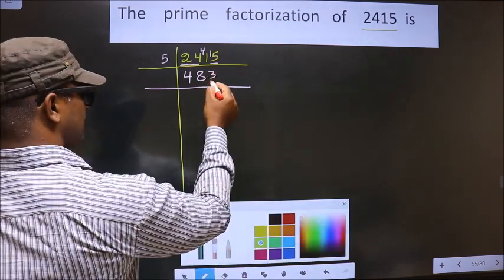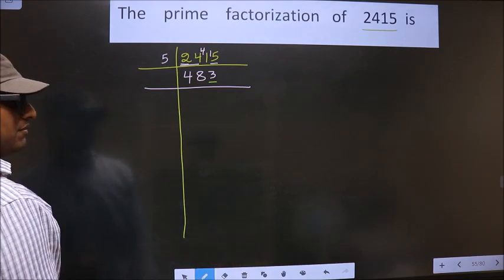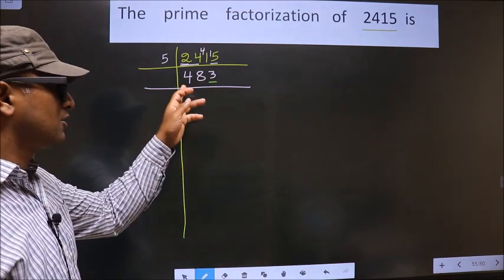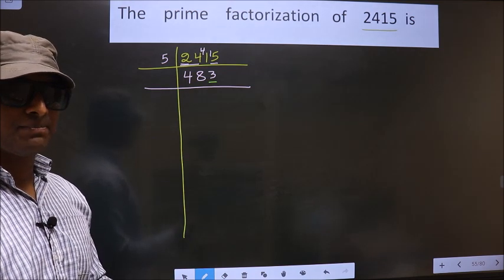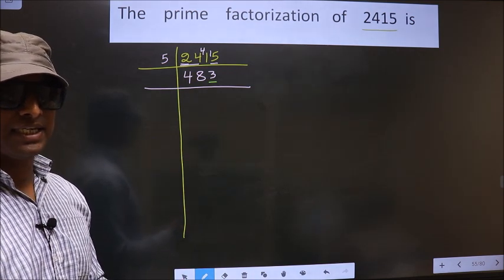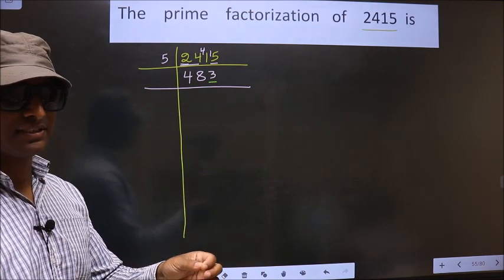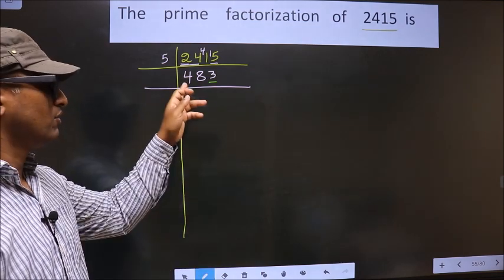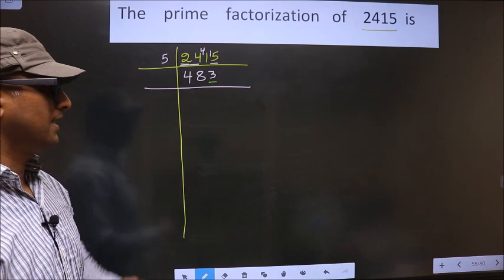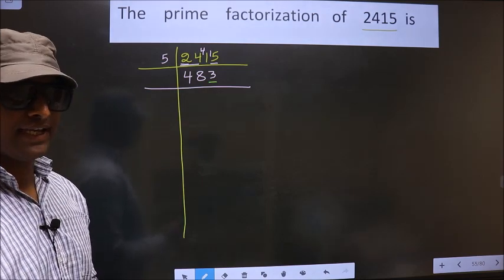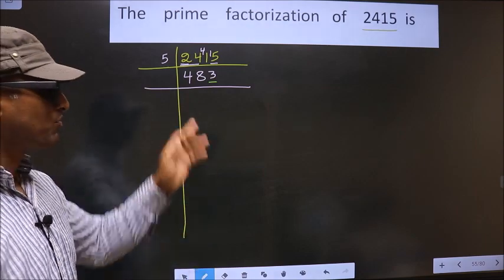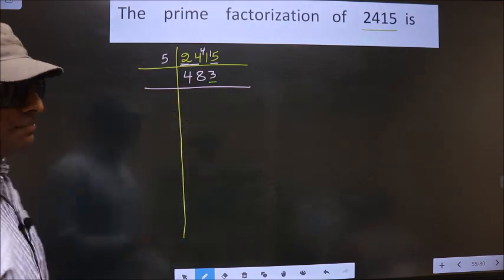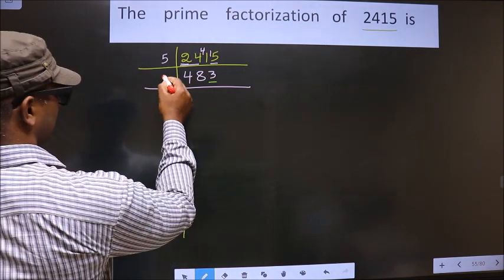Now for this number, last digit is 3 which is not even, so this is not divisible by 2. Next prime number is 3. To check divisibility by 3, we should add the digits. That is 4 plus 8 plus 3. We get 15. Is 15 divisible by 3? Yes. So this number is also divisible by 3. So we take 3 here.